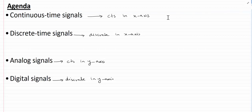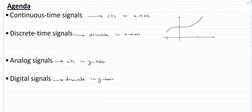If I have something like this, I can observe that this signal is defined for all the time instances from here till here, so we can say that the signal is continuous time because it is continuously defined for all the values of time. We denote the continuous time signal as x of t, and we use the letter t to denote the independent variable of a continuous time signal.